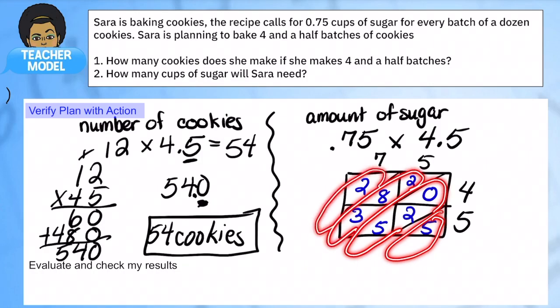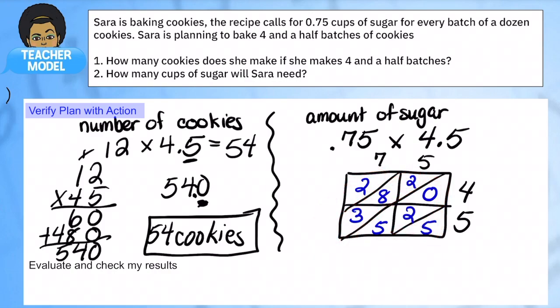And now I can just add up these sections, these diagonals, to get my numbers. So starting with the bottom one is just five. Five plus two is seven. Two plus eight is ten plus three is thirteen. Carry one plus one. And one plus two is three. So three thousand three hundred seventy five. Holy smokes, that is so much sugar.